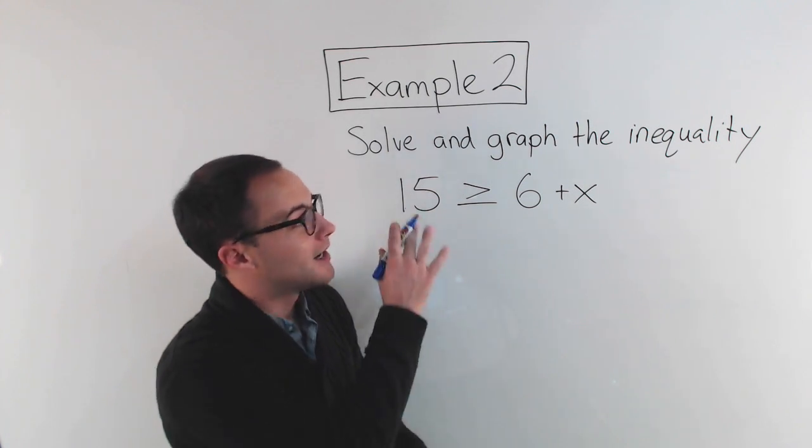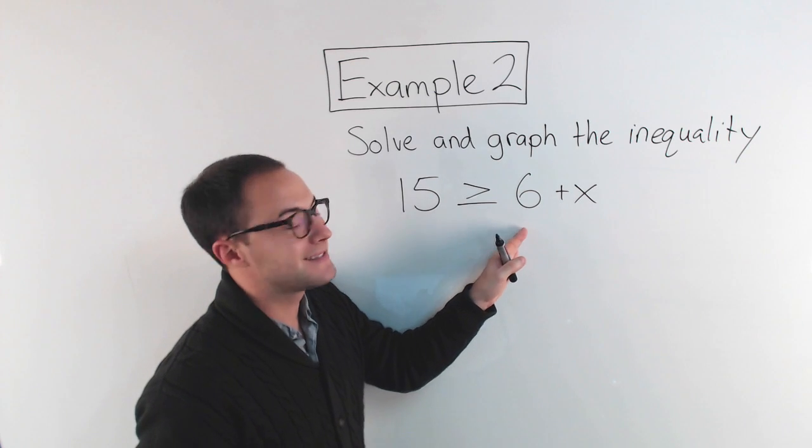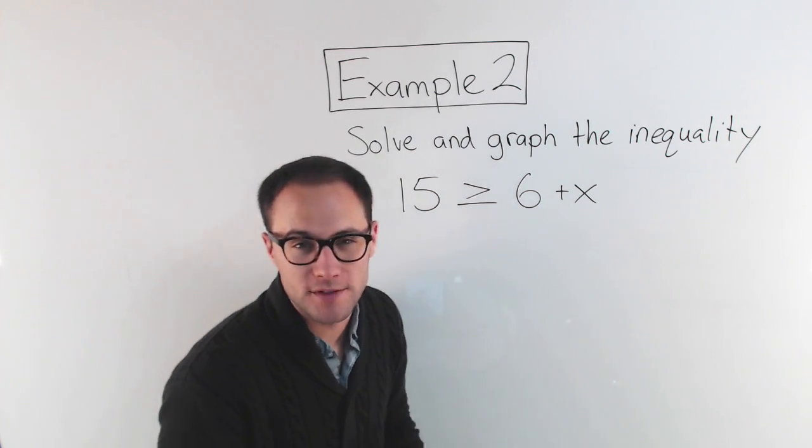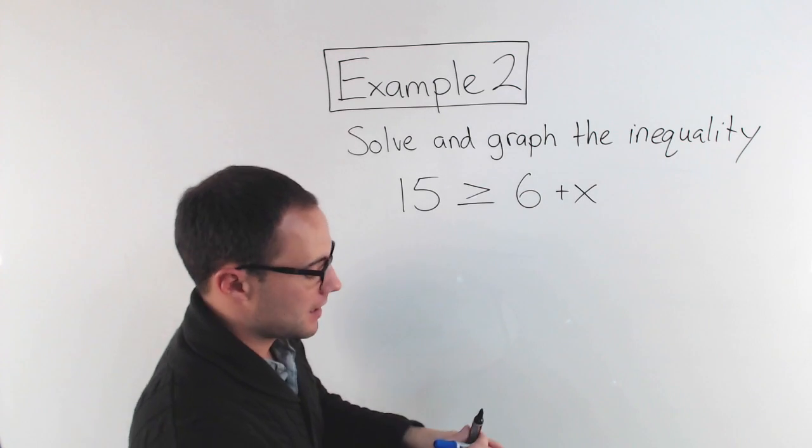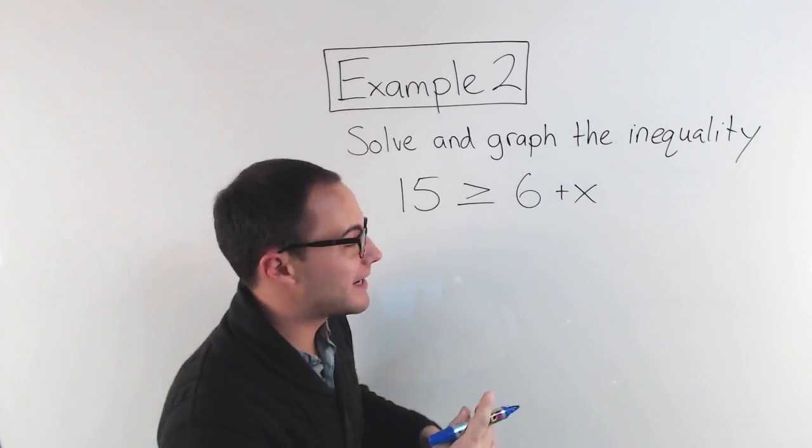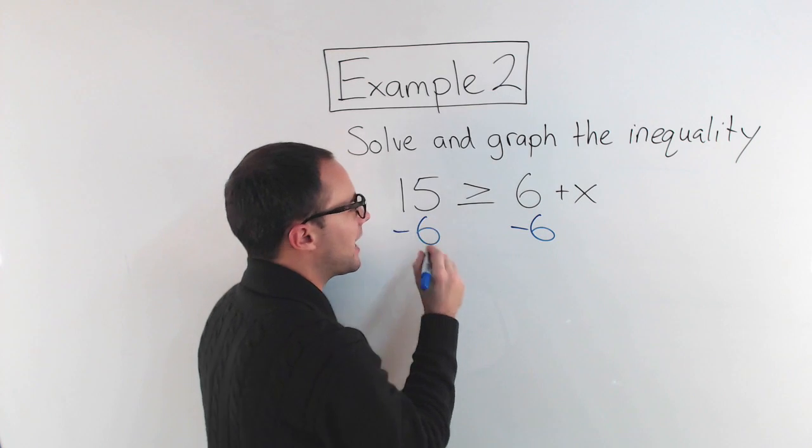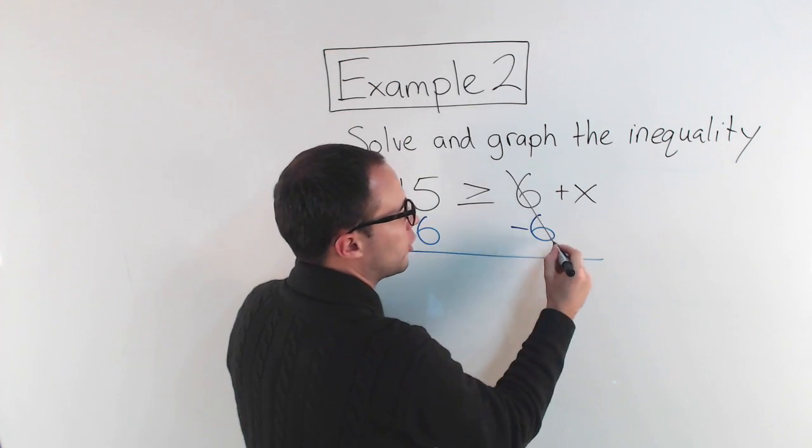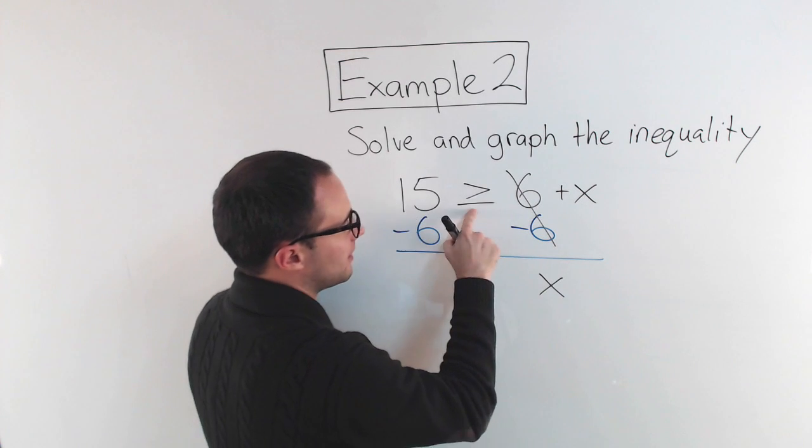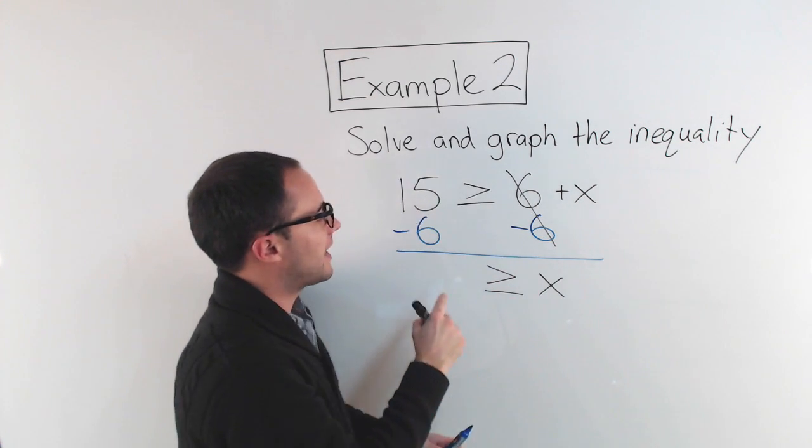Example 2. Again, solve and graph the inequality. We have 15 is greater than or equal to 6 plus x. My goal stays the same. I'm trying to get the variable alone. I've got this 6 that I need to get rid of, so I'm going to subtract 6 from both sides. Those 6s will go away, I'm left with x. I've got to keep the sign the same, just like that.